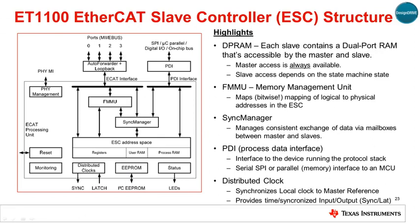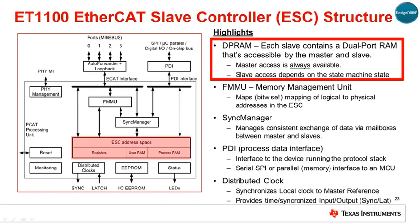This diagram shows the typical structure of an EtherCAT slave controller, or ESC. The main functional blocks of an ESC include a dual-ported RAM, DP RAM, that holds the configuration and control registers, user memory, and process data. The EtherCAT master always has read-write access, while access from the slave side, through the PDI, depends on the state machine's state.